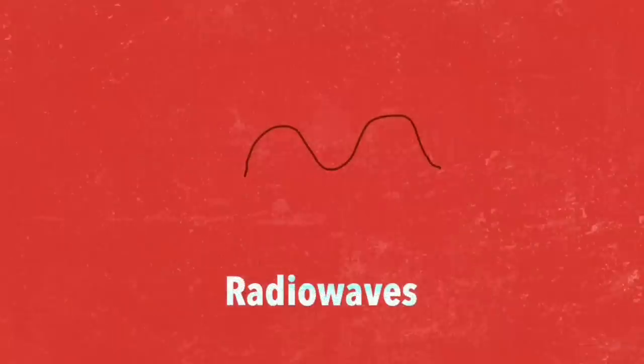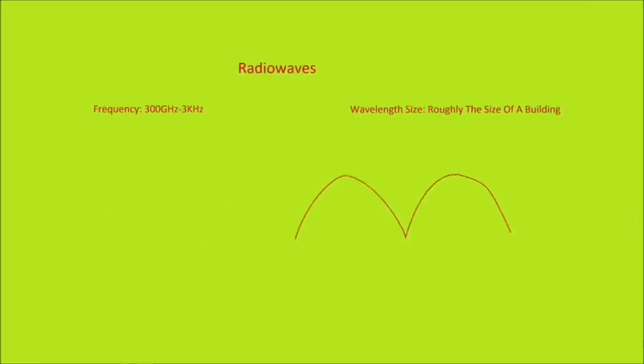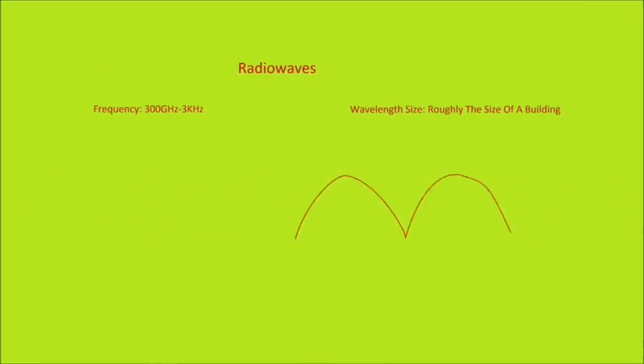So let's take a look at this list, starting off with radio waves. Radio waves are the least energetic of all forms of electromagnetic radiation since they have the longest wavelength and also the lowest frequency. Humans use radio waves for communication, television, cell phones, and radios are all made possible thanks to radio waves.